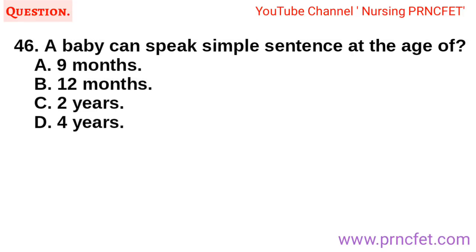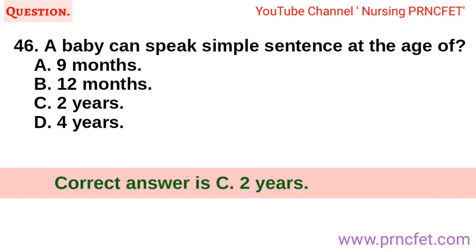Question 46: A baby can speak simple sentences at the age of: A. Nine months. B. Twelve months. C. Two years. D. Four years. Correct answer is C. Two years.